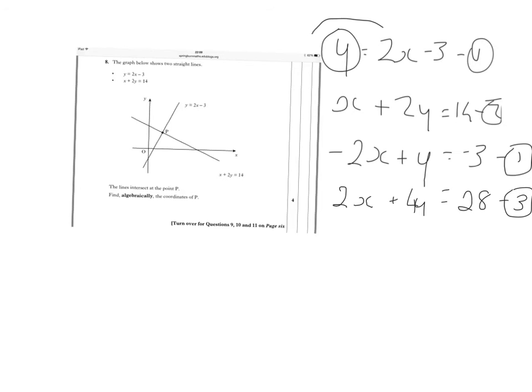Now I'm getting rid of x's. The signs are different, that's a plus and a minus. Signs are different, therefore I'm going to add the equations. So I'm going to add equations 1 and 3, and just communicate that to the examiner. Minus 2x plus 2x goes. Y plus 4y is 5y. And minus 3 plus 28 is 25. 25 divided by 5, and y is equal to 5.